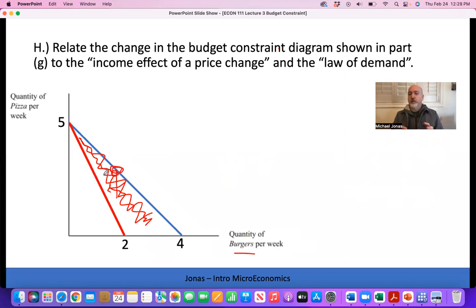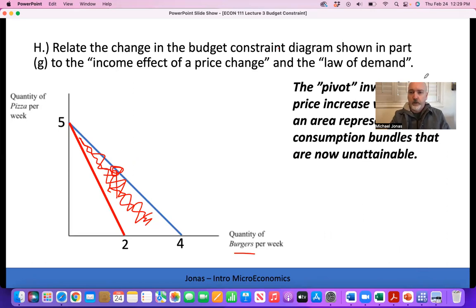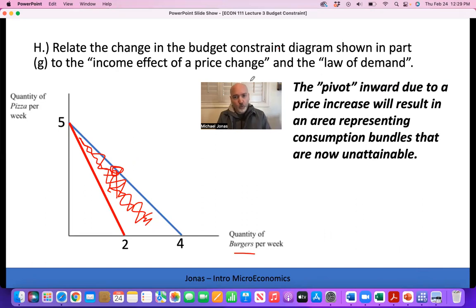The real value of our budget has decreased. So when the price goes up, consumption goes down simply because we can't afford the old combination. A price increase acts the same as effectively a decrease in your budget. Just be able to put that into words and locate what's happening on the diagram. That pivot inward due to a price increase results in that area representing consumption bundles that are now unattainable.